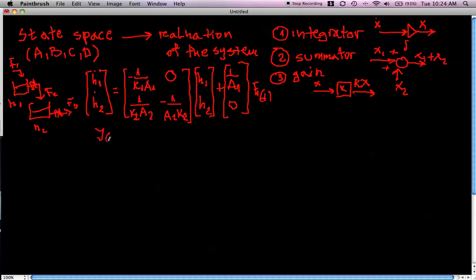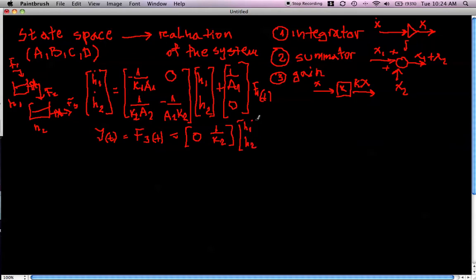For this model, we assume that Y(t) = F3(t), such that the output matrix C takes the form that selects F3 from the states H1 and H2, with D = 0 and input F1(t). If we look at this A, B, C, D matrix and utilize these three elements — integrator, summator, and gain — we should be able to represent this state-space in a signal structure where we have only signals, integrators, summators, and gains.